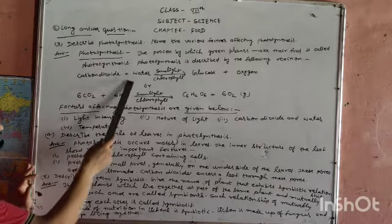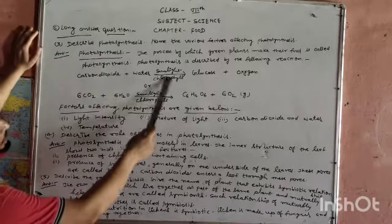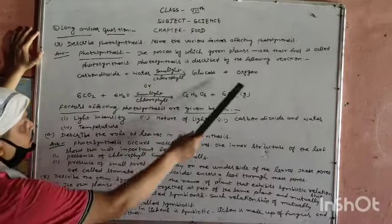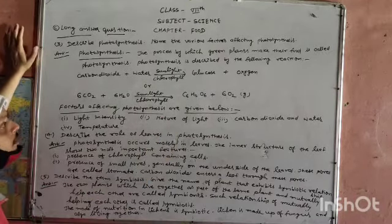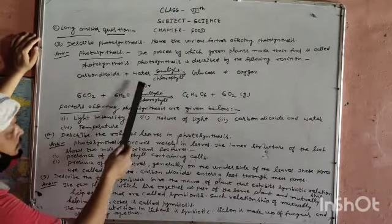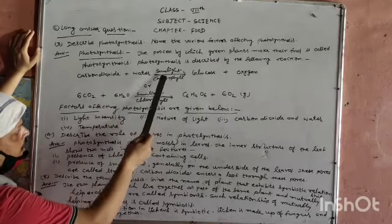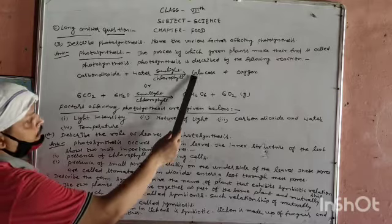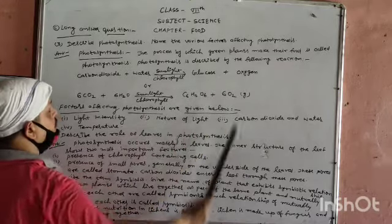Carbon dioxide plus water, in the presence of sunlight and chlorophyll, produces glucose plus oxygen. The reaction is carbon dioxide plus water in the presence of sunlight and chlorophyll gives glucose plus oxygen.